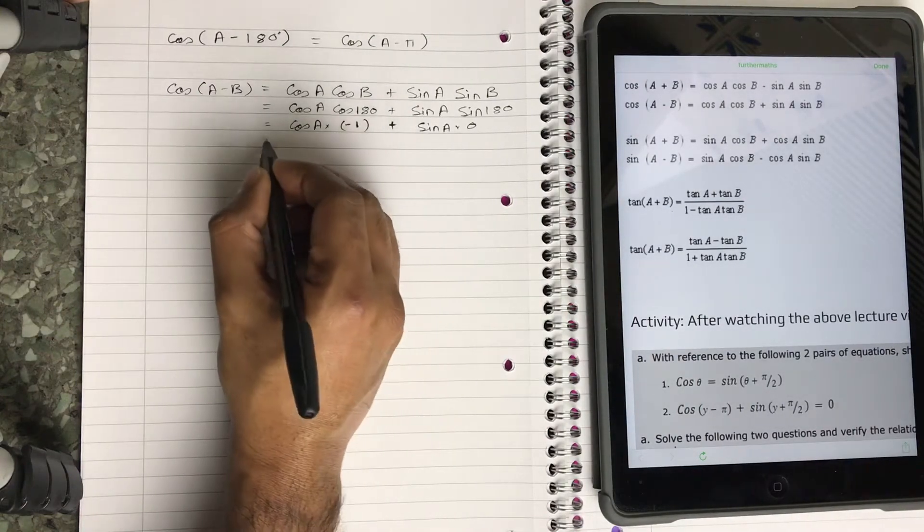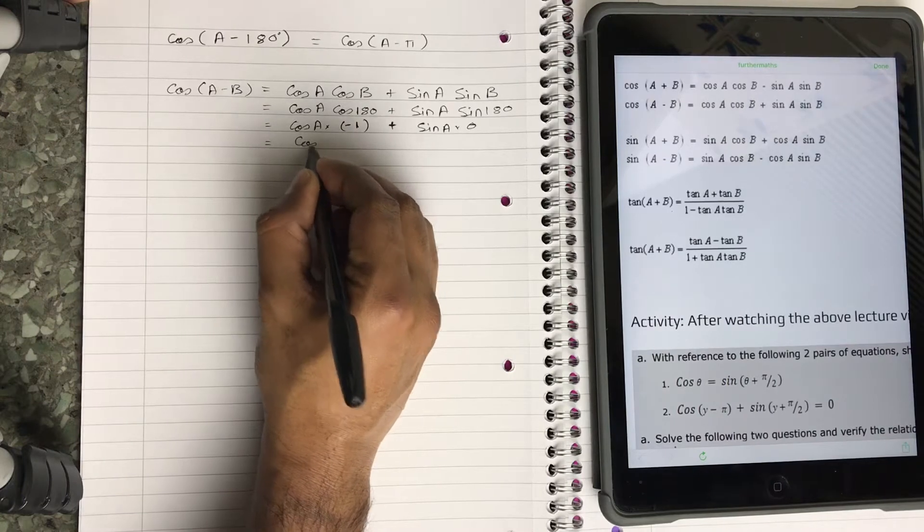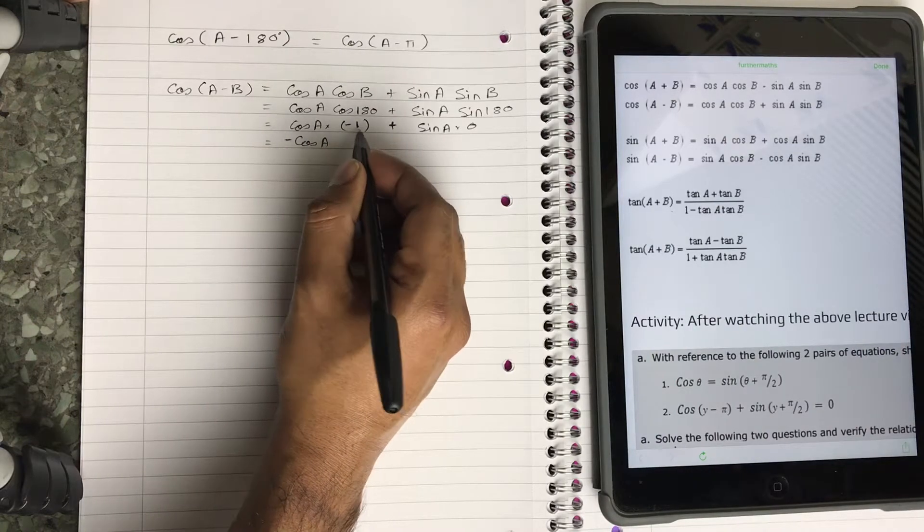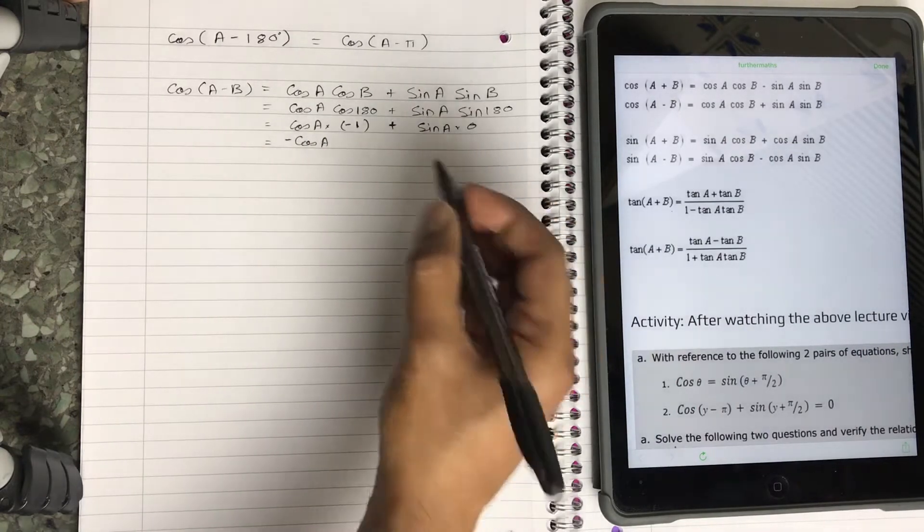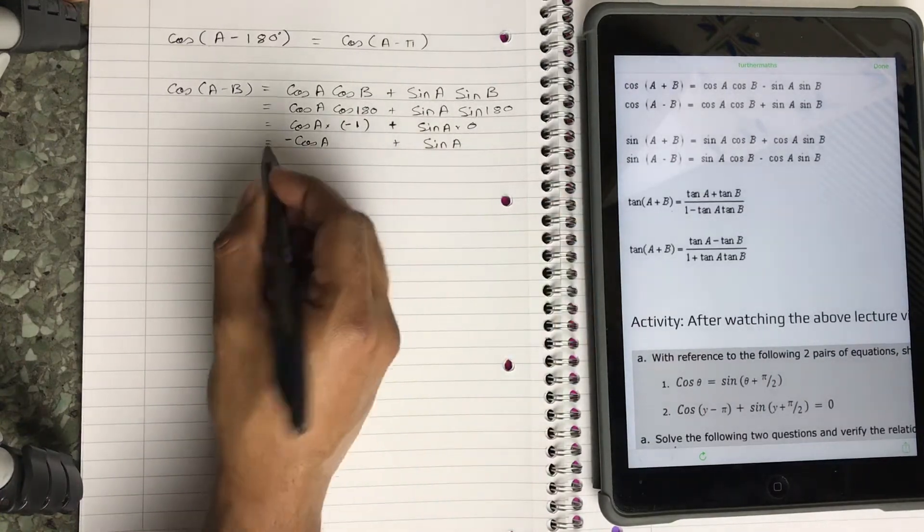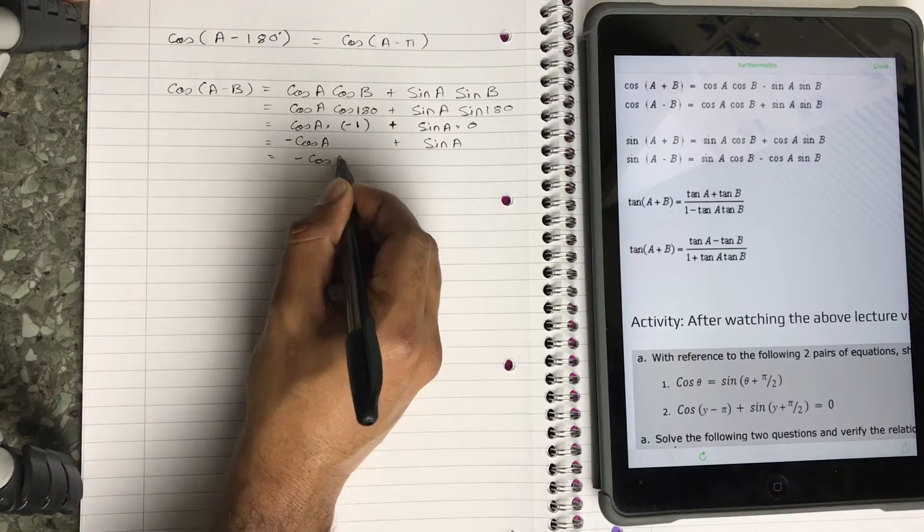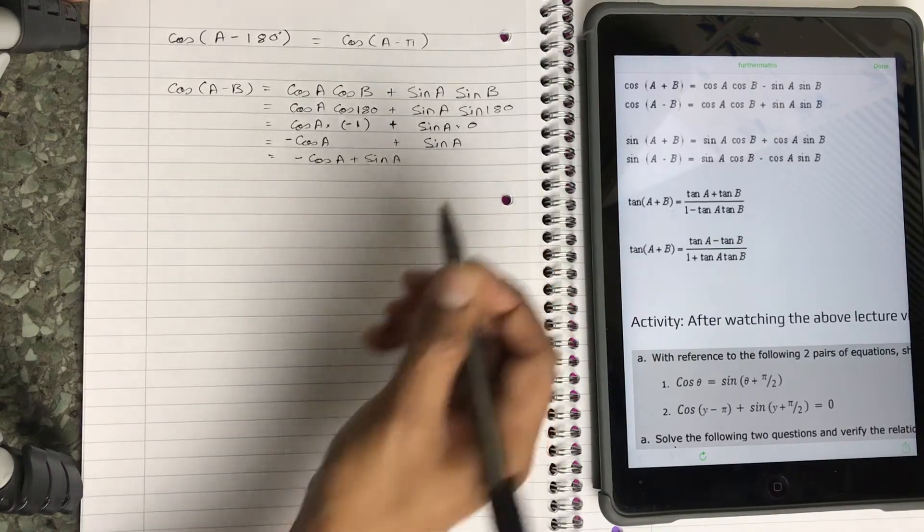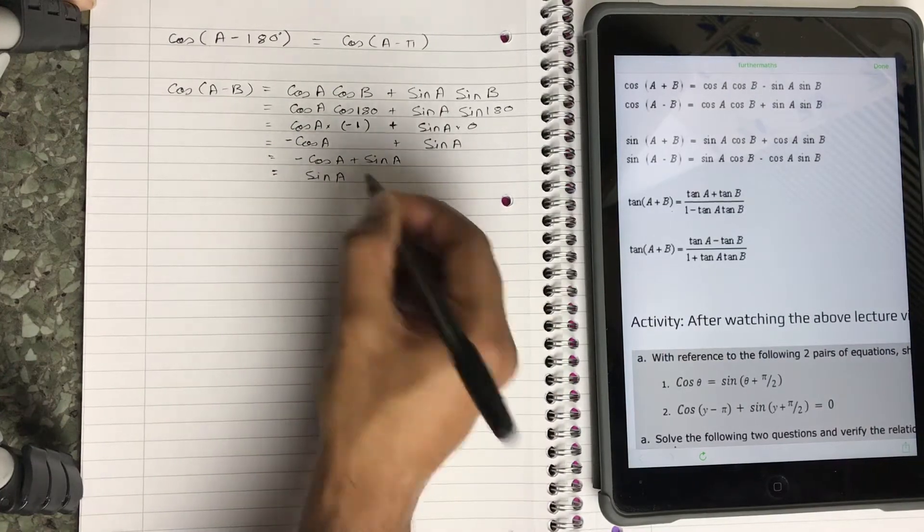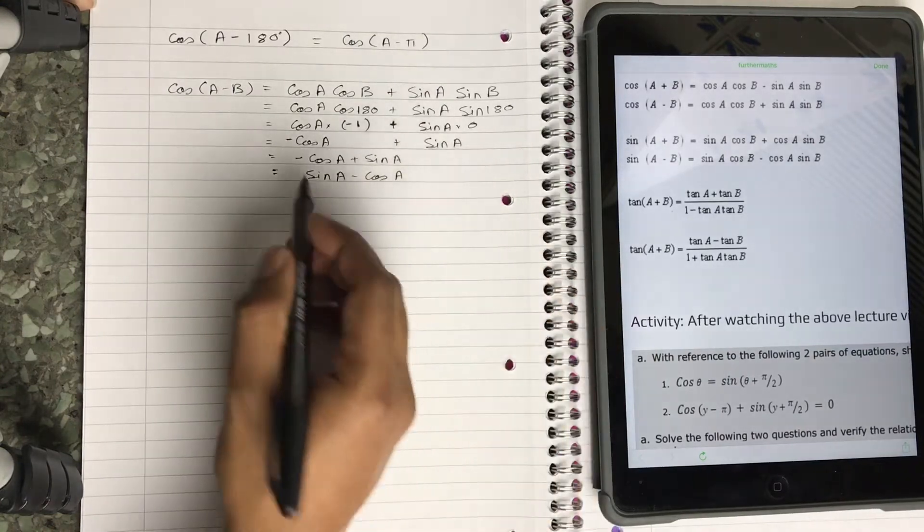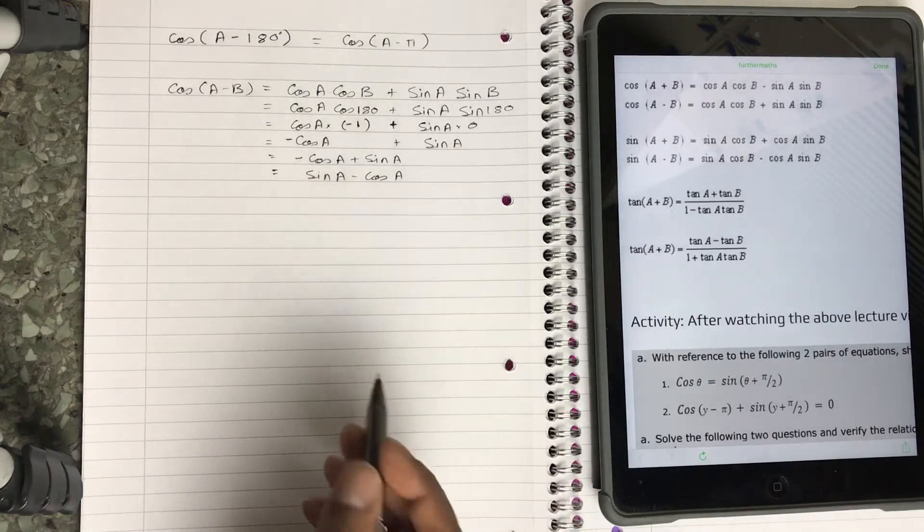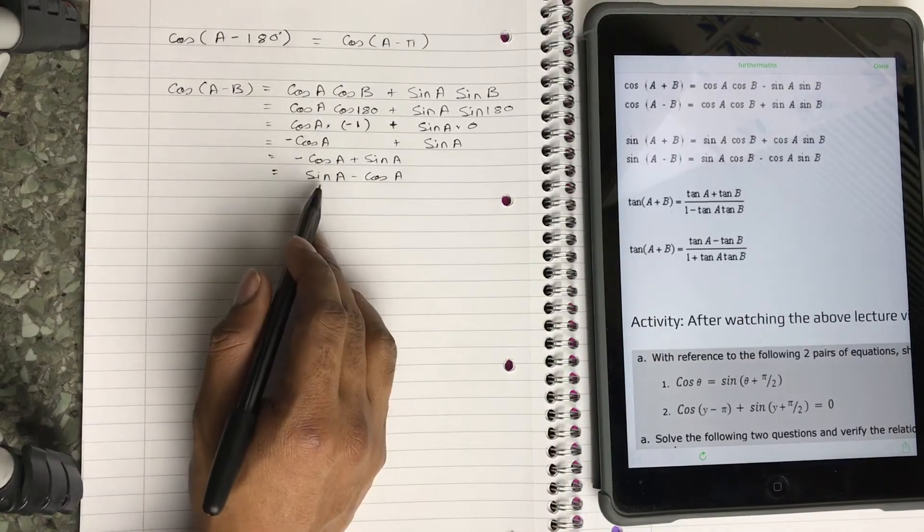Now as a result of this minus sign, I'm going to keep this aside. As a result of this minus sign, this entire expression goes negative, so that's going to be -cos(A), because this is cos(A) multiplied by minus 1, so -cos(A) + sin(A). I'm just going to write it down again: -cos(A) + sin(A), or it can also be written as sin(A) - cos(A), just looks neater.